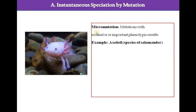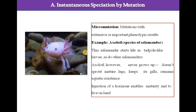This mutation is called micro mutation — a mutation with extensive or important phenotypic results. The example is the axolotl, a salamander that starts its life as a tadpole-like larva but never grows up: it doesn't sprout mature legs, keeps its gills, and remains aquatic. Injection of hormones may enable maturity and allow it to live a normal life on land. This kind of instantaneous speciation by mutation is called micro mutation.